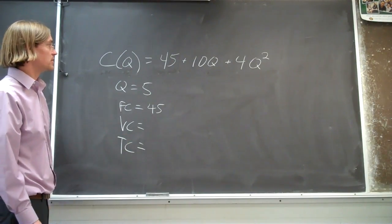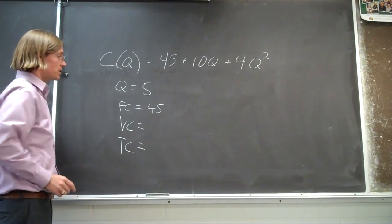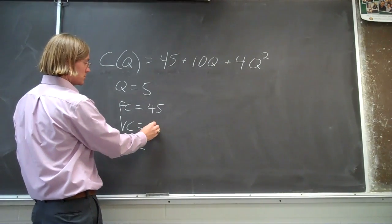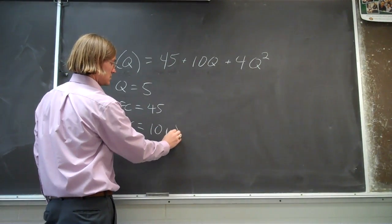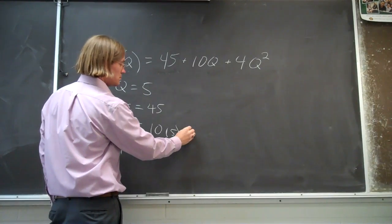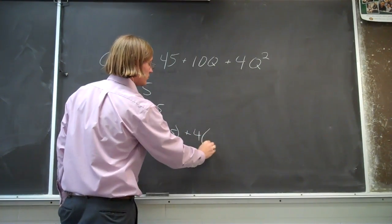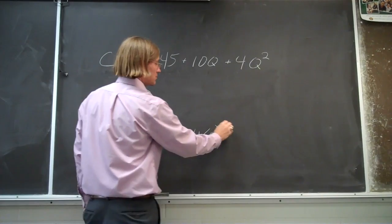The variable component here is going to be equal to 10 times 5, your output, plus 4 times 5 squared. That would be your variable component.